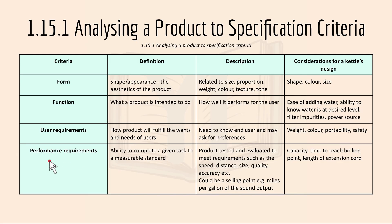Performance requirement is the ability to complete a given task to a measurable standard. The product is tested and evaluated to meet requirements such as speed, distance, size, quality, and accuracy. This could be a selling point like miles per gallon or sound output. For a kettle, it could be the capacity, the time to reach boiling point, and the length of the extension cord.